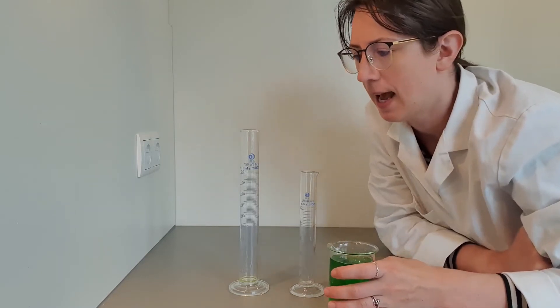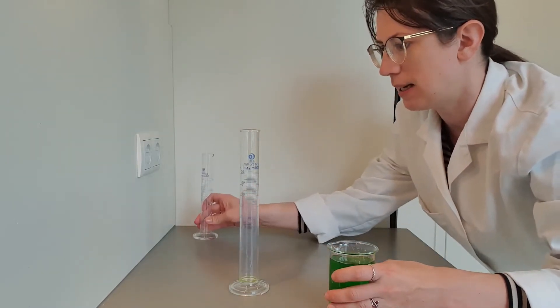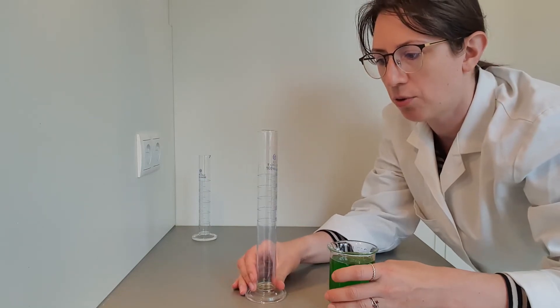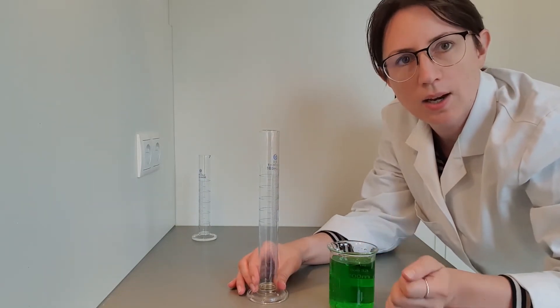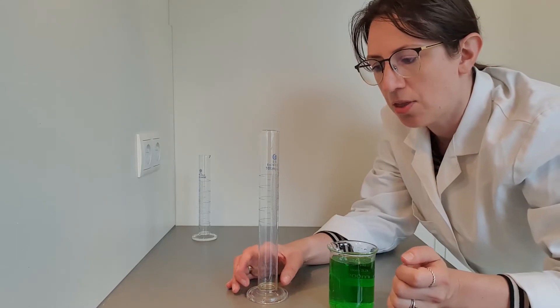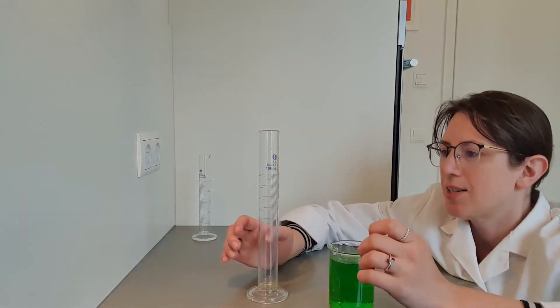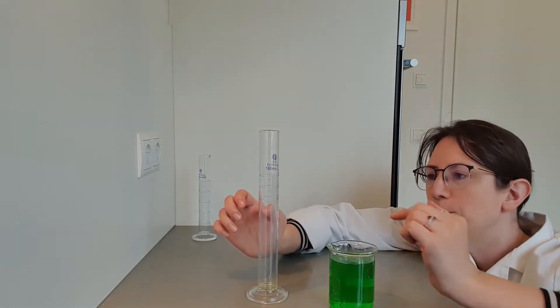And I'm going to use the 100 milliliter measuring cylinder to pour my volume in. Now, let's say I want 60 milliliters. The best way to do this is to get down to eye level so that my eye is right level with the line for 60 milliliters.